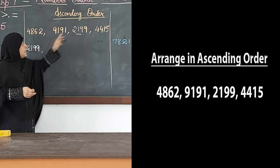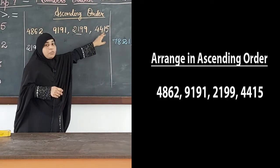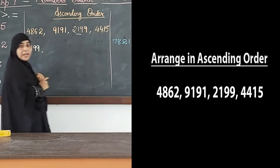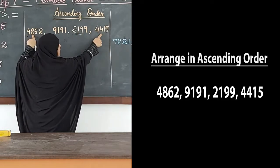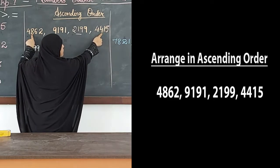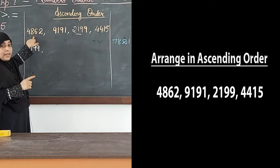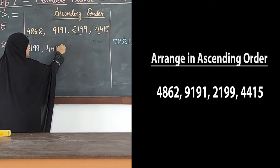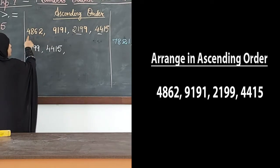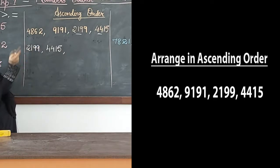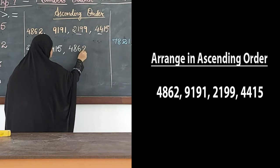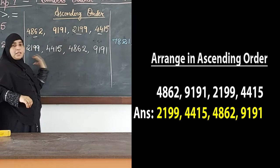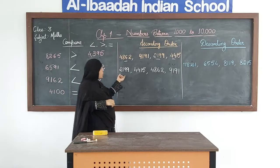Three numbers are left: 4862, 9191, and 4415. We can see 9191 is the greatest. Now we compare 4862 and 4415 — thousands place is the same, so we move to hundreds: 800 and 400. Since 400 is smaller, 4415 is our second number. Then comes 4862, and last is 9191. So the ascending order is 2199, 4415, 4862, 9191 — arranged from small to big.